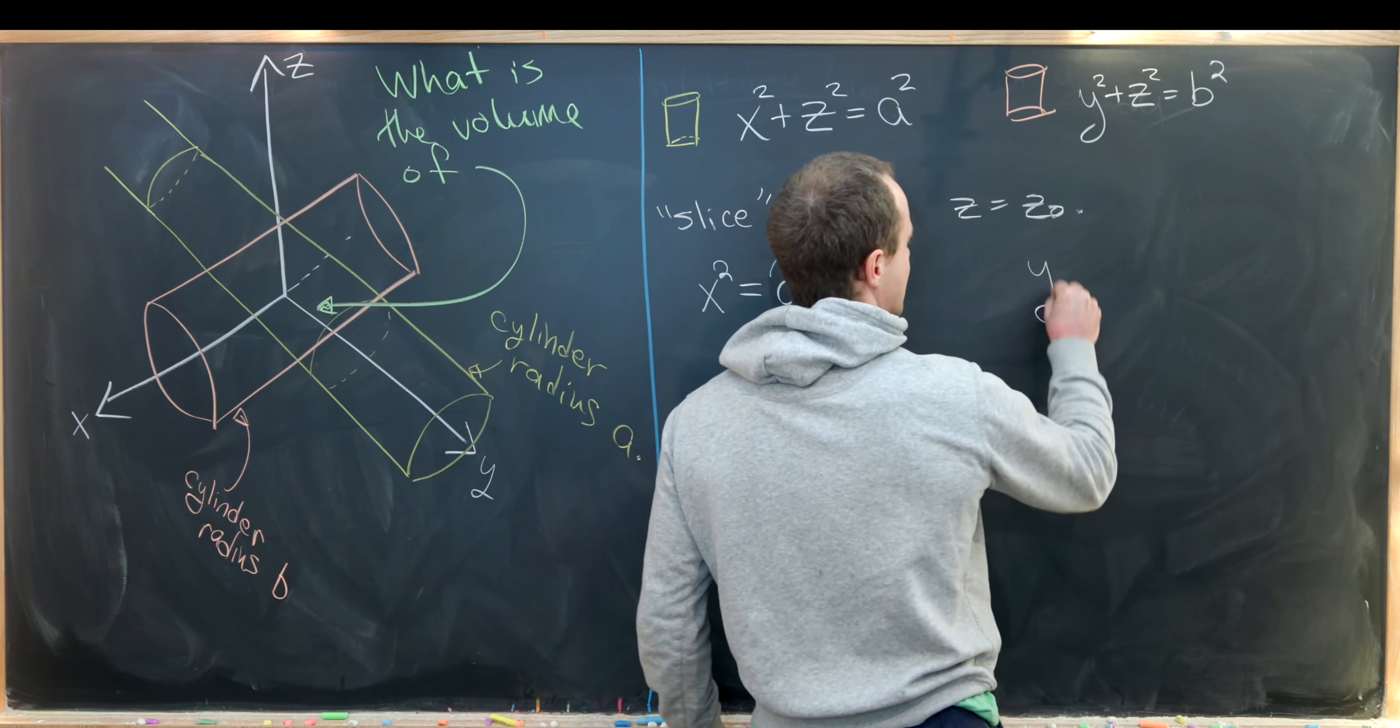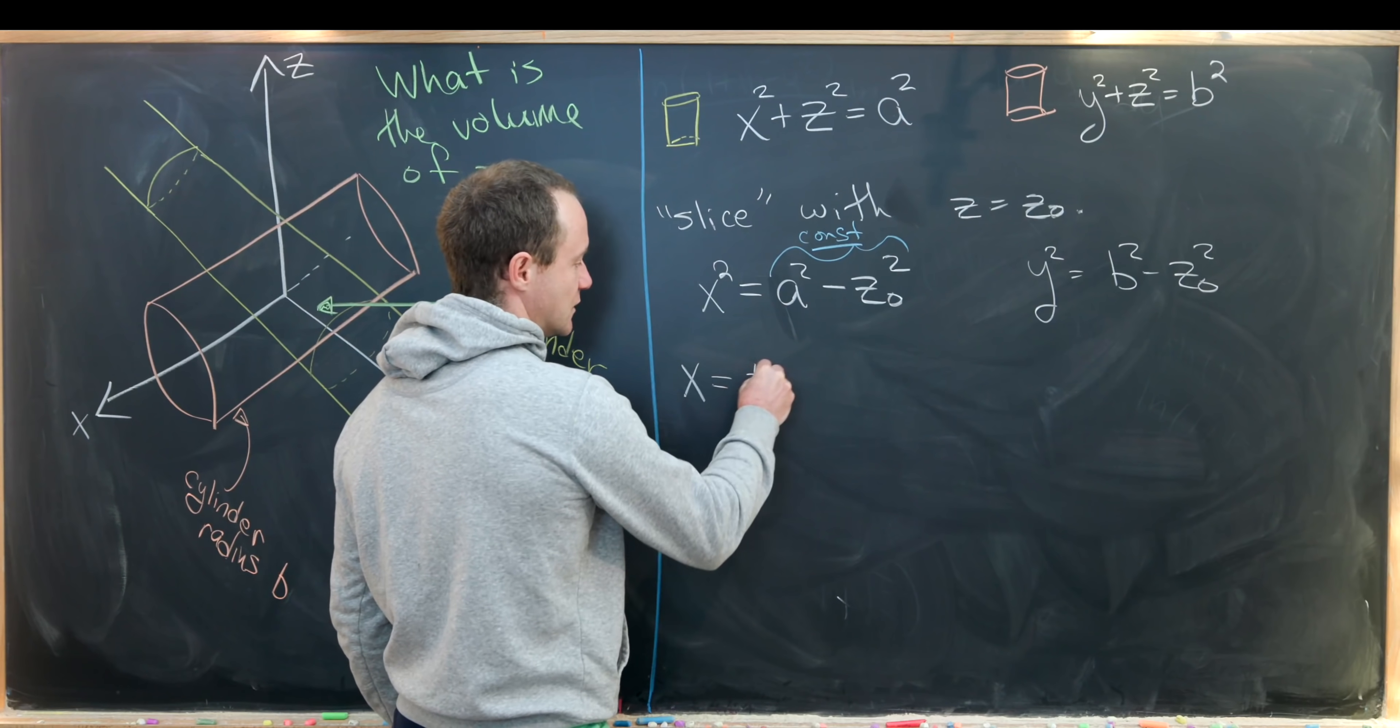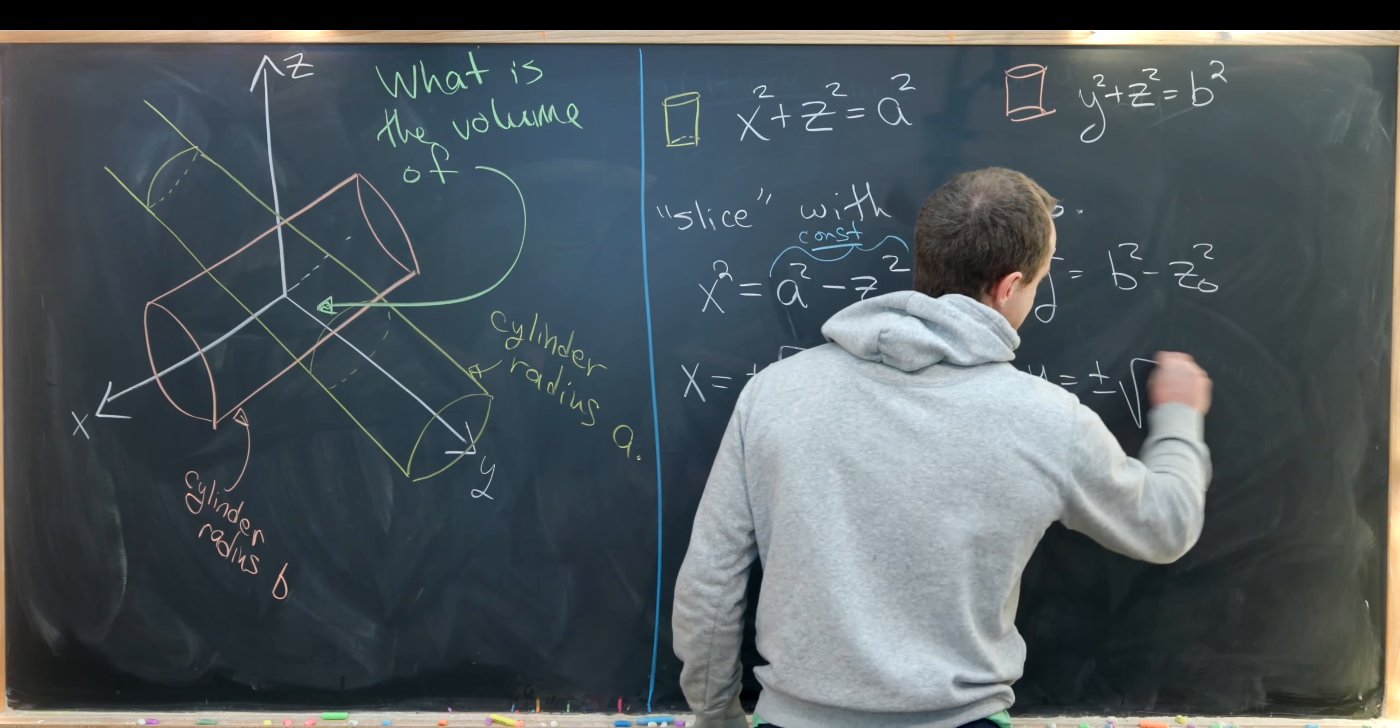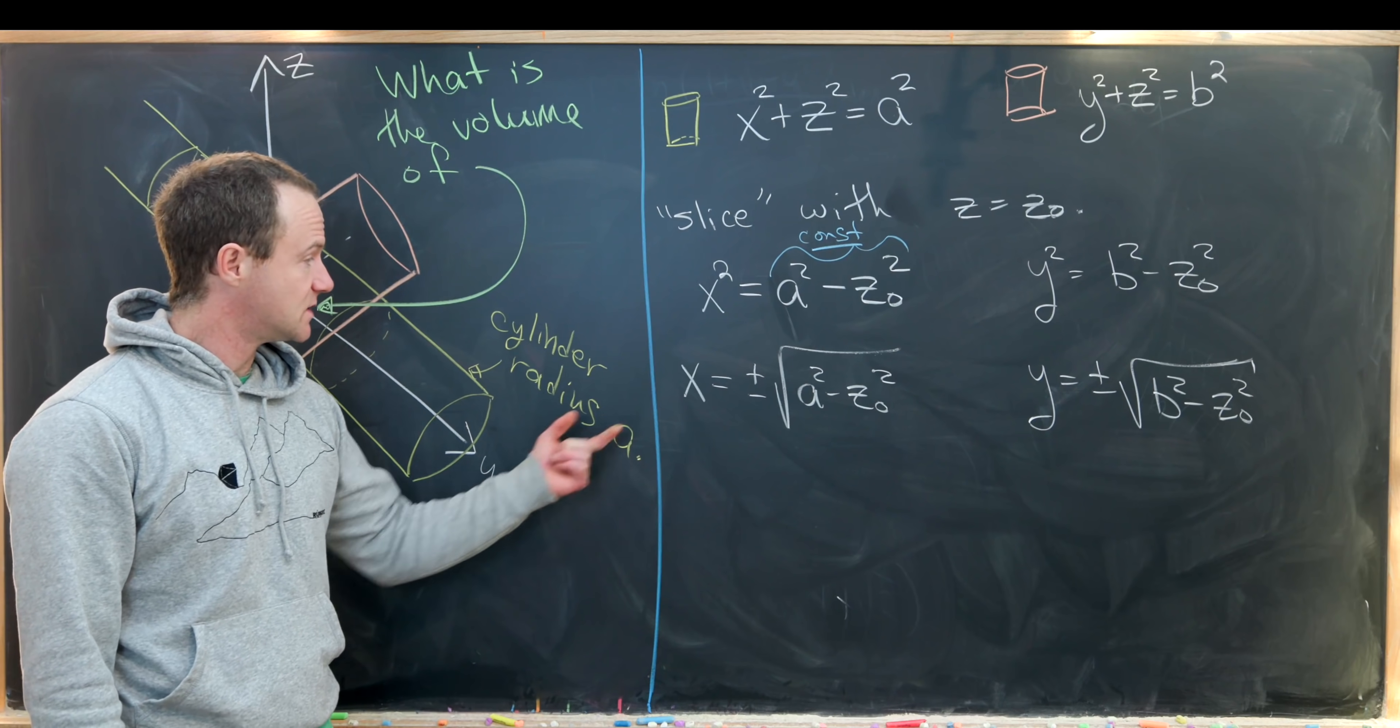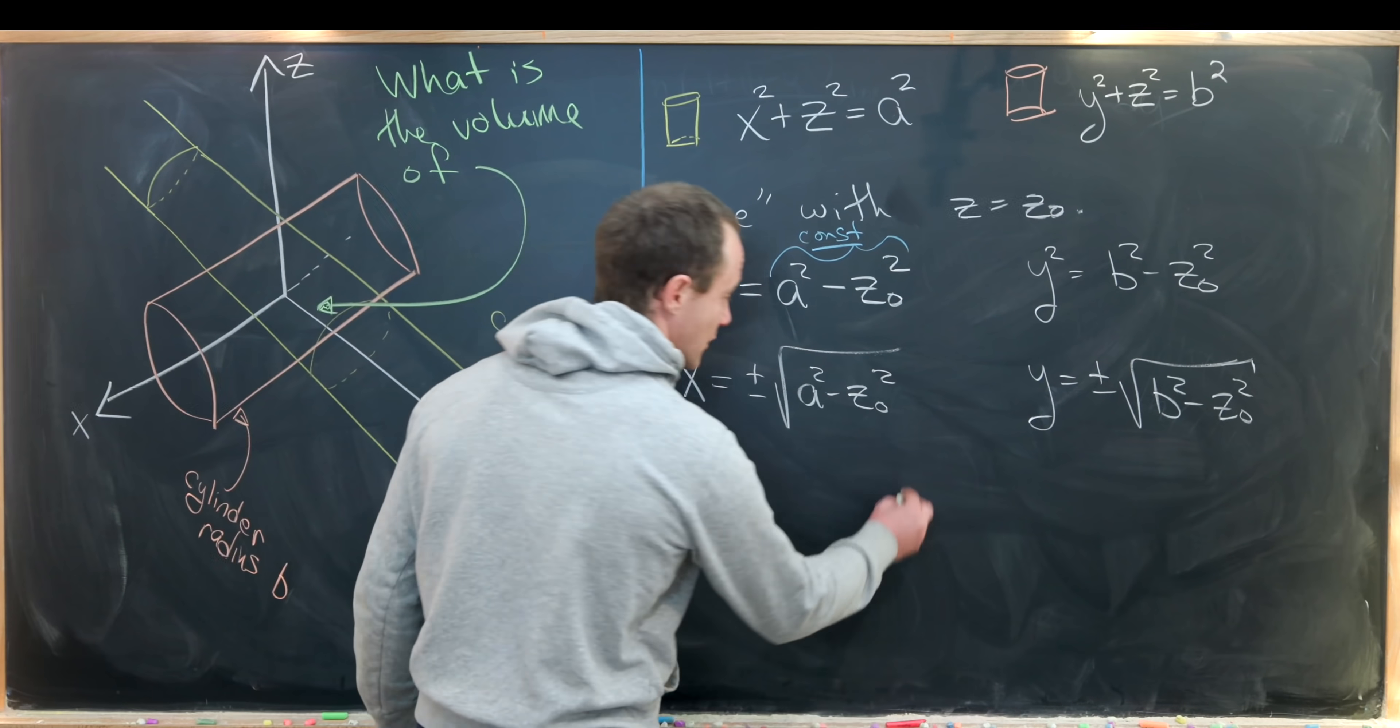Similarly, we'll get y² = b² - z₀². Now we can take the square root of both sides and we'll see that x = ±√(a² - z₀²) and y = ±√(b² - z₀²). We can think about drawing a picture of this in the plane because x is fixed to be positive or negative the same number and y is also fixed to be positive or negative the same number.